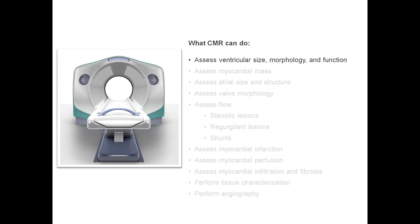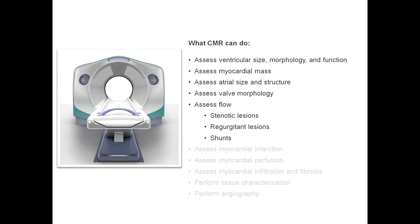CMR allows us to assess myocardial mass with an accuracy that is second to none. We can also use CMR to assess both left and right atrial size and structure. We can assess the morphology of all four heart valves. And we can also use CMR to assess blood flow, which means we can quantify the severity of stenotic and regurgitant valve lesions, and we can also quantify the severity of any intracardiac shunts.